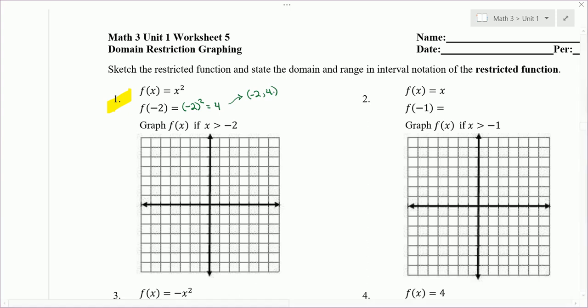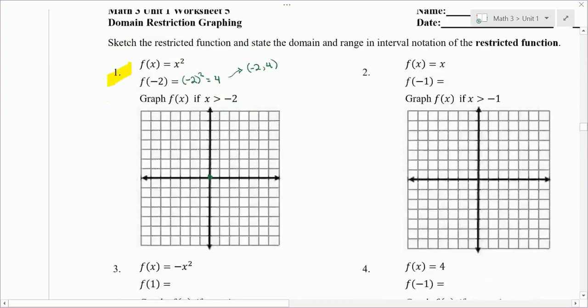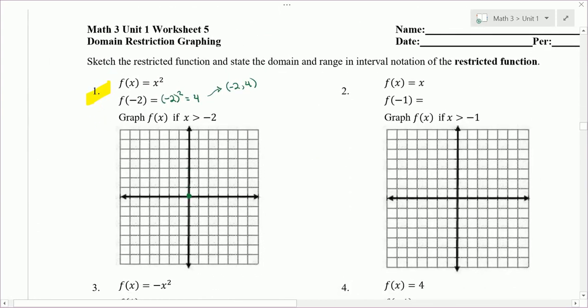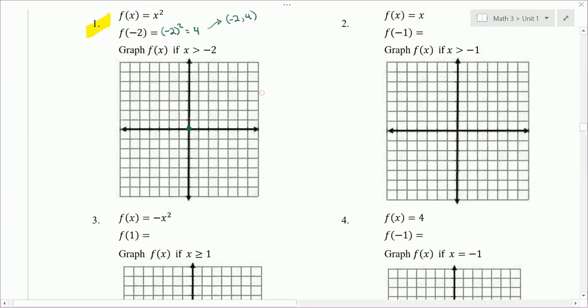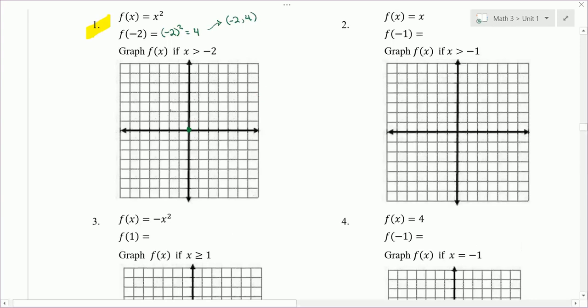And without the restriction, let me just graph this without the restriction. So we know that the shape looks like this. So it goes through 0,0 because it's the parent graph, there's no translations. It goes through negative 2, 4, and that's the left half of the U shape. And positive 2, 4. So this is without the restrictions. Don't write this down yet because I'm going to be erasing some stuff.